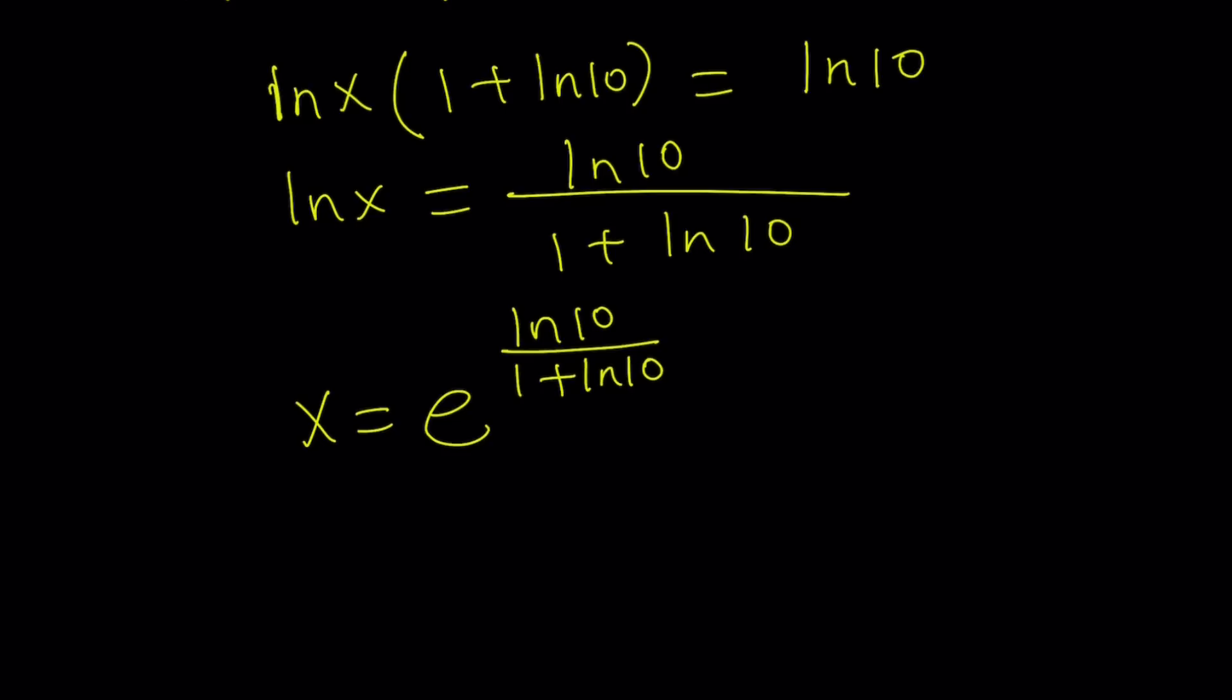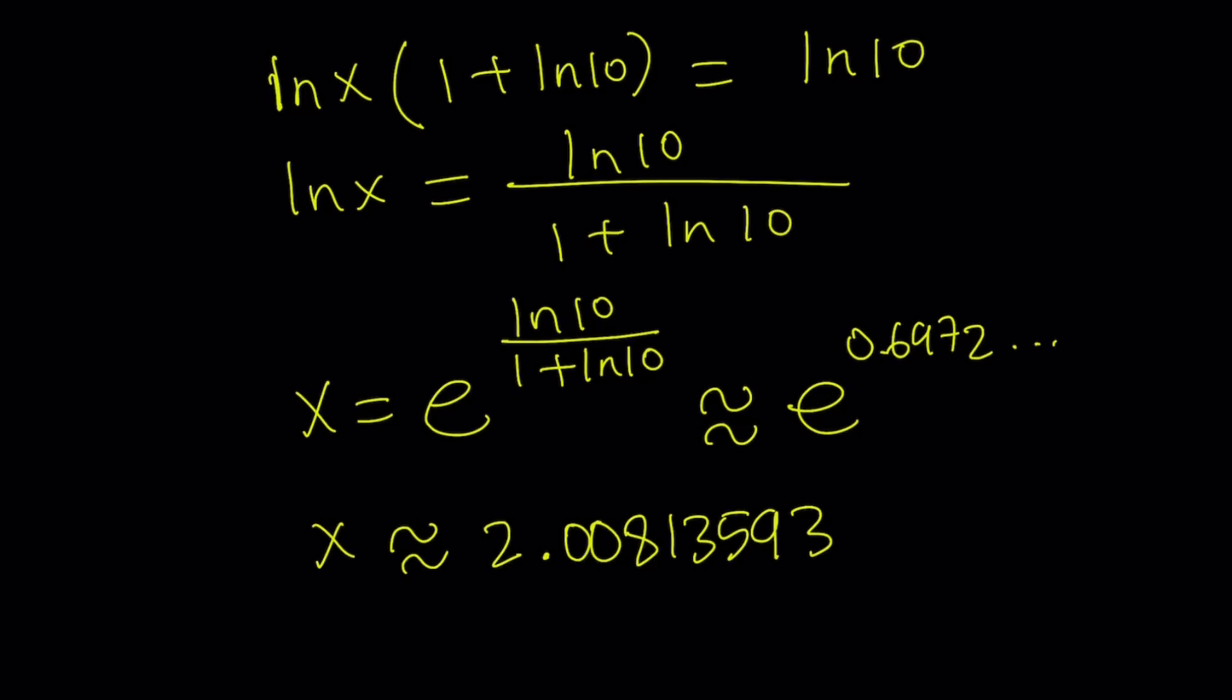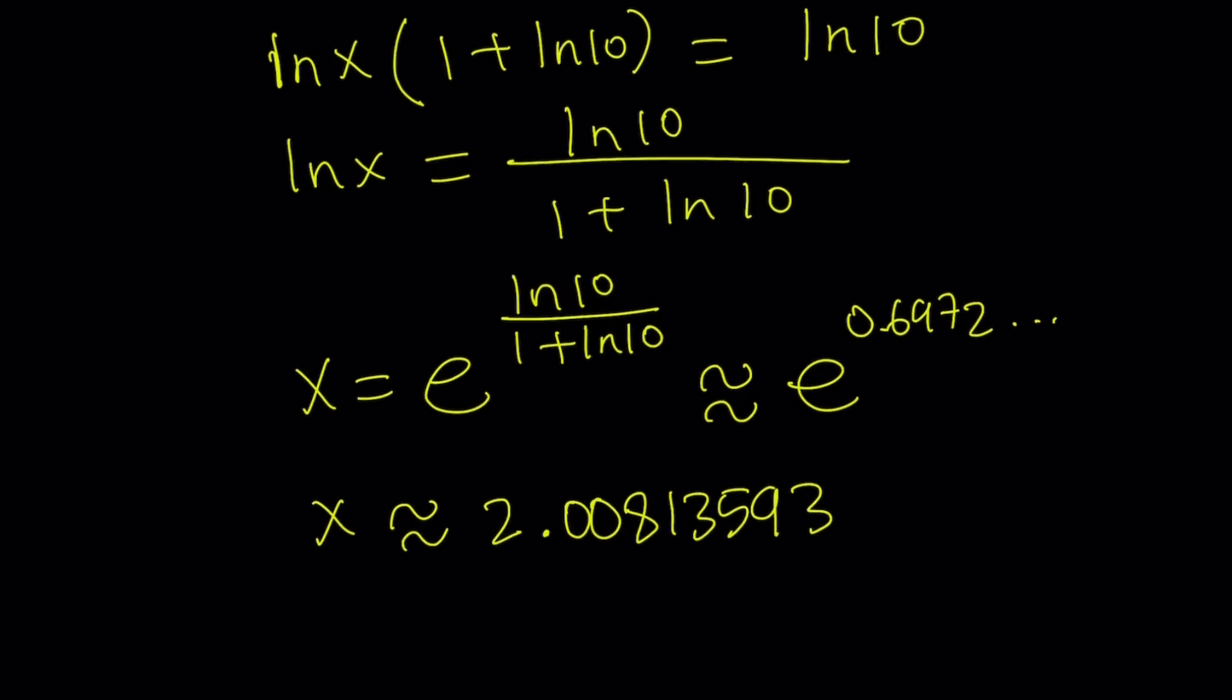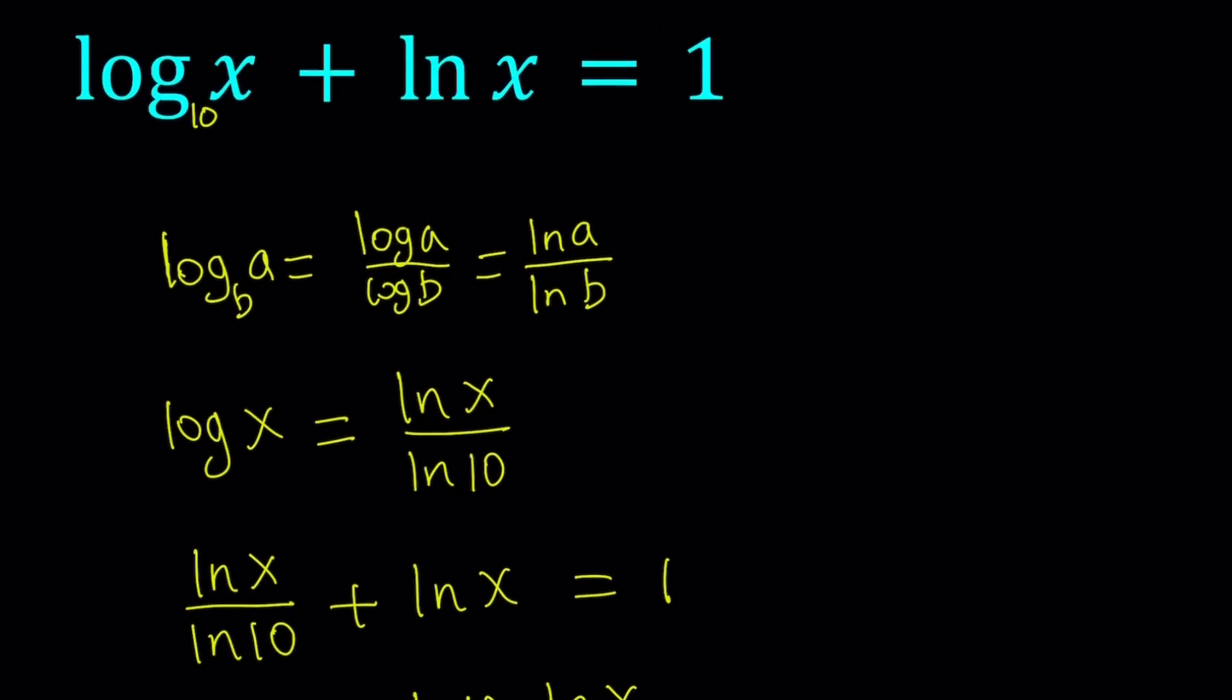Now, what is this value? What is ln 10 divided by 1 plus ln 10? So approximately, this is the x value. We get from e to the power of ln 10 over 1 plus ln 10. Now, is there another way to approach this problem? So we got the solution by changing bases. And then we got the answer.